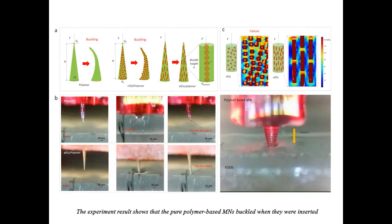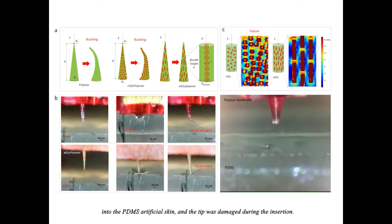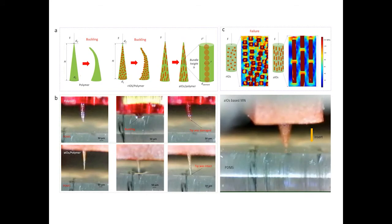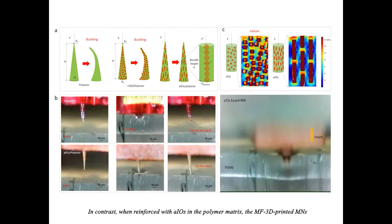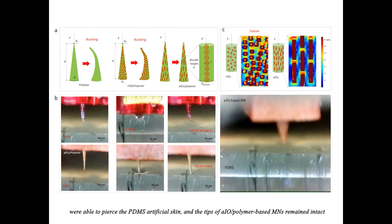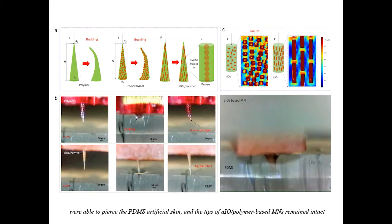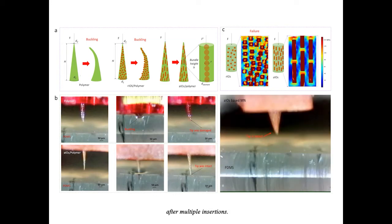The experiment result shows that the pure polymer-based microneedles buckled when they were inserted into the PDMS artificial skin, and the tip was damaged during the insertion. In contrast, when reinforced with IOs in the polymer matrix, the MF3DP printed microneedles were able to pierce the PDMS artificial skin, and the tips of AIO polymer-based microneedles remained intact after multiple insertions.